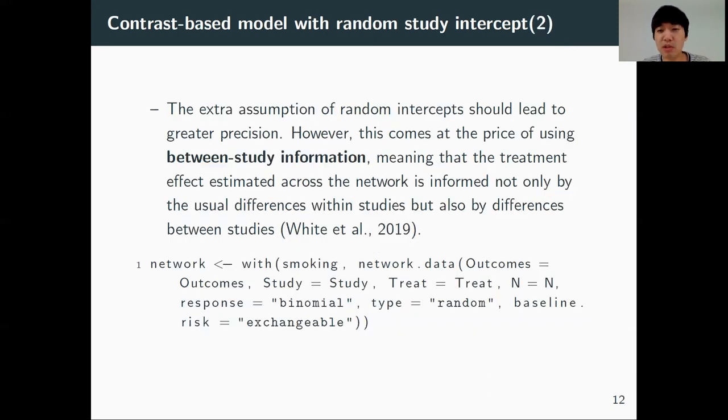This extra assumption of random intercept should lead to greater precision. However, this comes at the price of using between-study information, meaning the treatment effects are no longer estimated only by the usual differences within studies, but also by differences between studies. We can fit this model by adding parameter baseline risk and setting it to equal exchangeable.